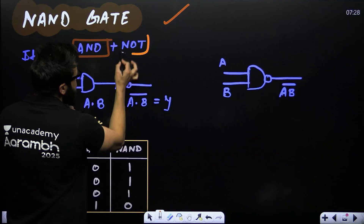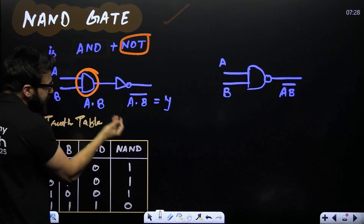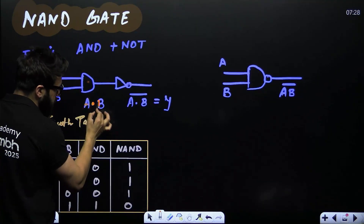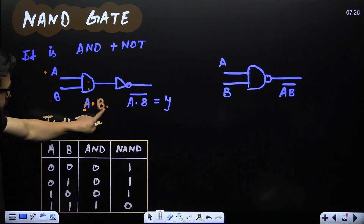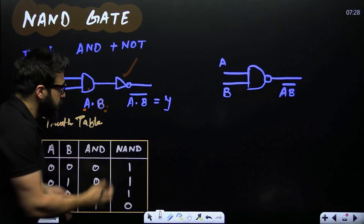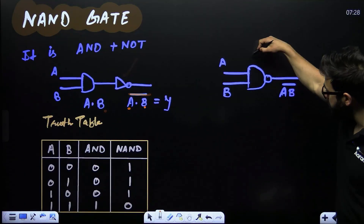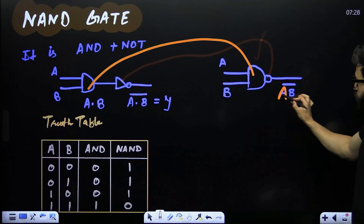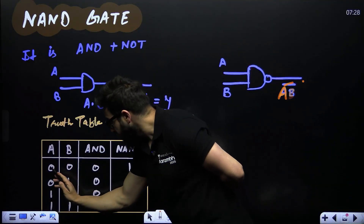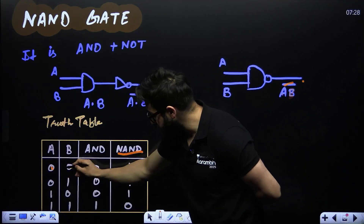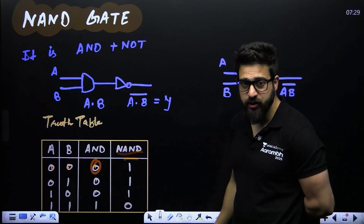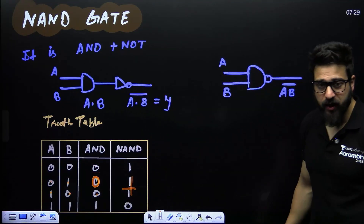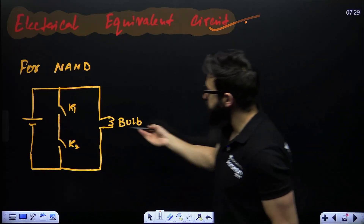The NAND gate is simply the combination of AND plus NOT. The AND gate multiplies A · B, then the NOT gate puts the bar, giving final output (A · B)-bar. In the circuit symbol, place a small ball at the output of the AND gate — that is the NAND gate symbol. Truth table: zero · zero = zero, bar → one; zero · one = zero, bar → one; one · zero = zero, bar → one; one · one = one, bar → zero.